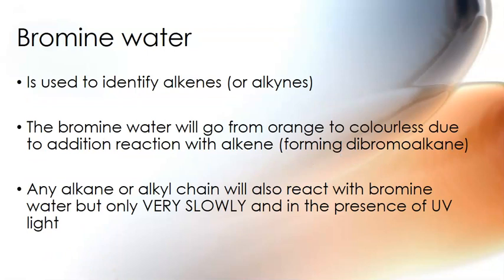Bromine water is fantastic — it's used to identify the presence of a double bond or a triple bond, particularly in alkenes and alkynes. The bromine water goes from orange to colourless via an addition reaction. Alkanes and other alkyl chains will react with bromine water but only very slowly and only in UV light, so this is not diagnostic for alkanes. Everything with a carbon chain will react with bromine water slowly over time in UV light, so that's not useful for identification.